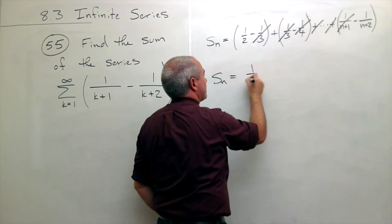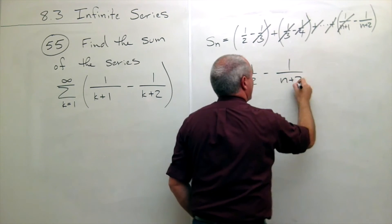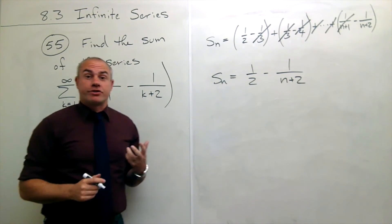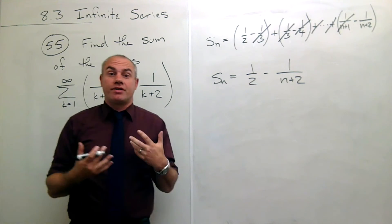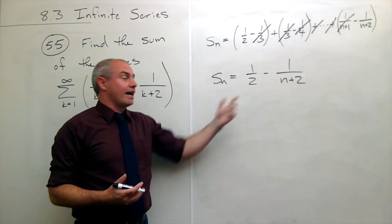So what this s sub n ends up being, it's a half minus 1 over n plus 2. So this is what we call the nth partial sum. Add up the first n of them and see what you get. This is what I get.